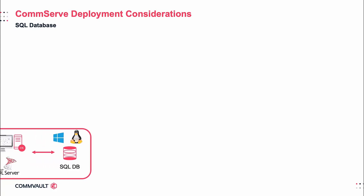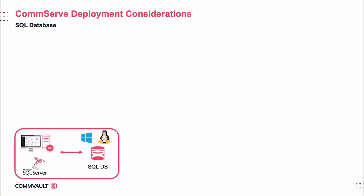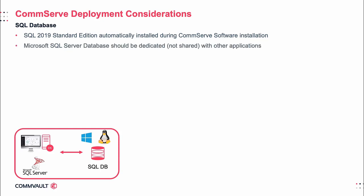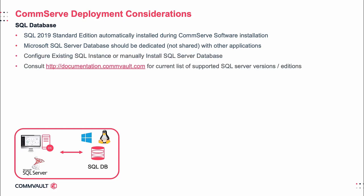The Commvault software uses Microsoft SQL Server as its database engine. By default, Commvault installs Microsoft SQL Server 2019 Standard Edition during installation of the CommServe software for both Windows and Linux, covered under Microsoft's independent software vendor Royalty License Program. The Microsoft SQL Server database installed on the CommServe computer must be used exclusively by the Commvault application and cannot be shared with other applications. Organizations can also optionally configure an existing SQL instance or manually install a SQL server before installing Commvault server packages. Please consult Commvault documentation for a current list of supported SQL Server versions and editions.